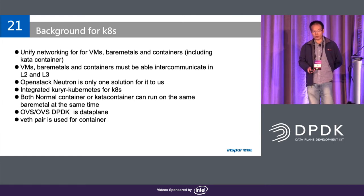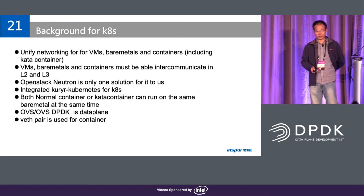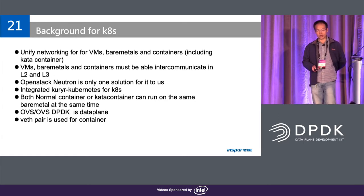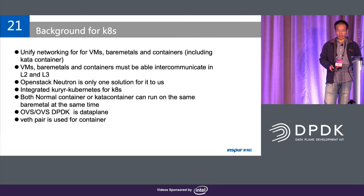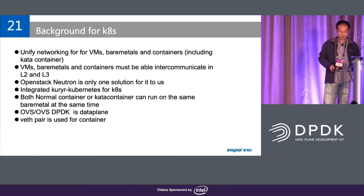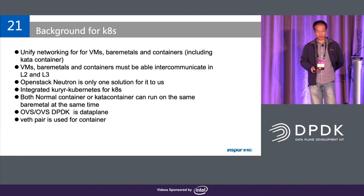In our deployment we also use Kubernetes, because we want to unify the networking solution for containers. So we still use OpenStack Neutron for Kubernetes networking. We integrate Kubernetes so that containers can do communication between each other — they can be on the same L2 network or same L3 network. In this deployment we can run a normal container and a Kata container on the same bare metal at the same time.